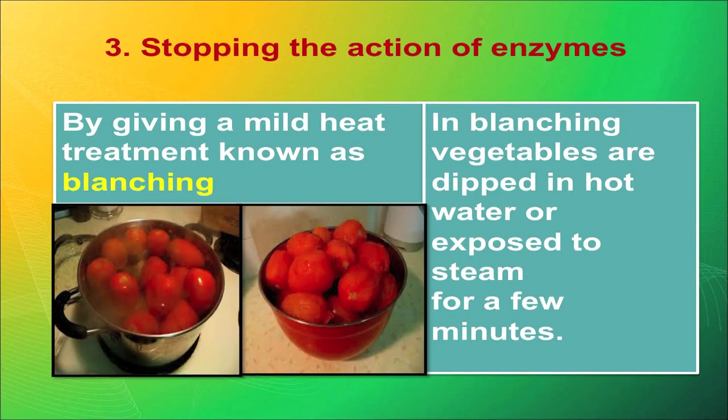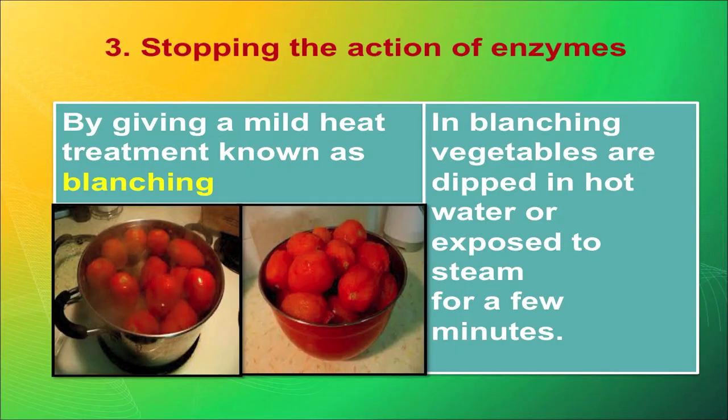The third principle is stopping the action of enzymes. Enzymes are chemical compounds present within the food which, in a conducive environment, react with other chemical compounds and give a reaction, and this keeps going until it is stopped. When you harvest a food, enzymes still work and cause ripening even after harvest. This can be stopped by giving a mild heat treatment known as blanching — in blanching, vegetables are dipped in hot water or exposed to steam for a few minutes, then cooled. That is how the food is blanched.